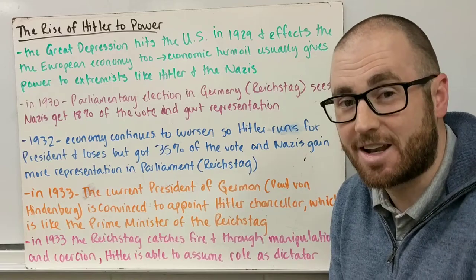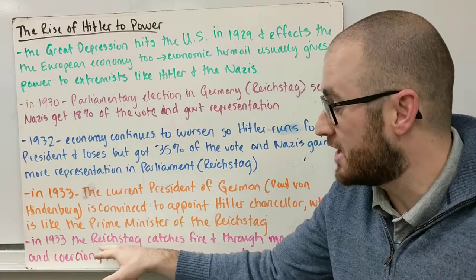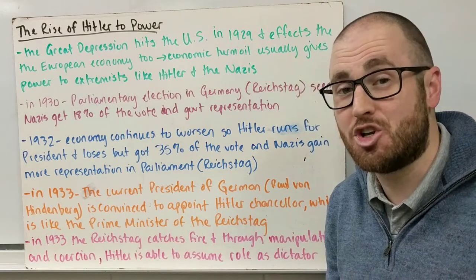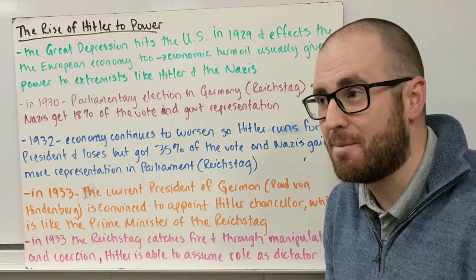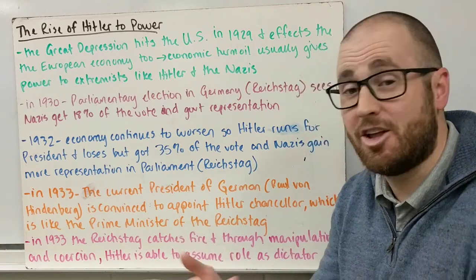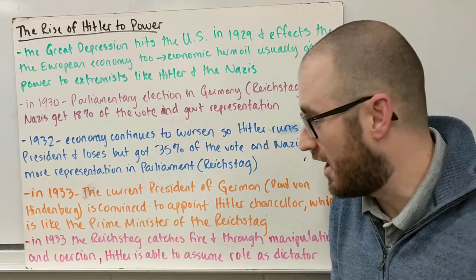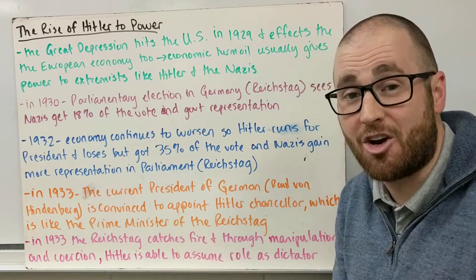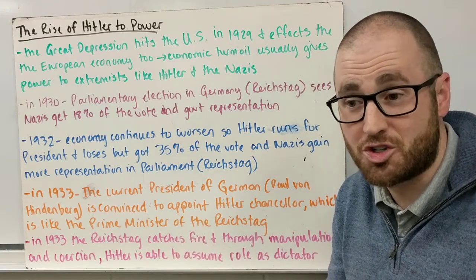Hitler becomes the chancellor and leader of the Reichstag in 1933. Then, also in 1933, the Reichstag building — where parliament meets — had a mysterious fire. It was blamed on a Dutch communist, and it's still very controversial as to who started it and whether Hitler had anything to do with it, or whether he just capitalized on it.